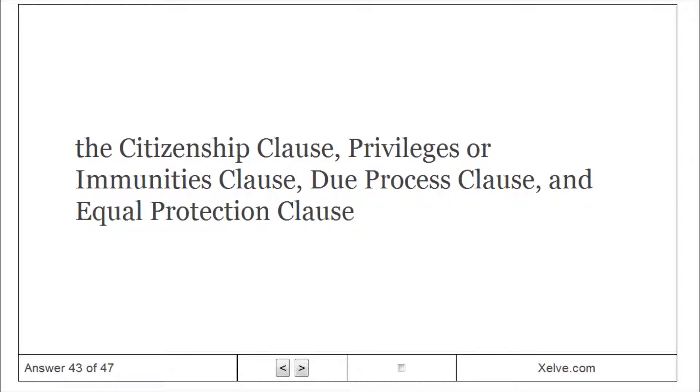The four clauses of the Fourteenth Amendment are: the Citizenship Clause, the Privileges or Immunities Clause, the Due Process Clause, and the Equal Protection Clause.